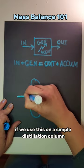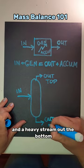If we use this on a simple distillation column, we have one stream in, a light stream out the top, and a heavy stream out the bottom.